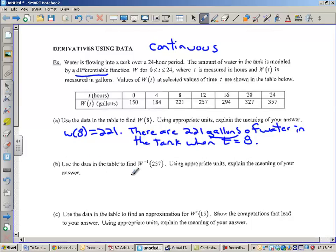Part B. Use the data in the table to find W inverse at 257. Remember for inverse functions, if a function F travels through A, B, then F inverse has to travel through B, A. So, I'm going to use that notation. So, you can write that down, but I have to erase it because I'm running out of space. Alright, so W inverse of 257 means go backwards from Y back to X. Or, in this instance, gallons back to T. W inverse of 257 would be equal to 12.